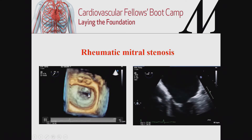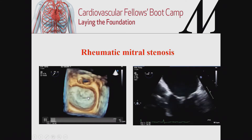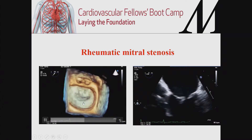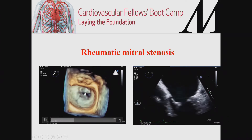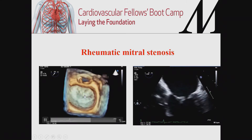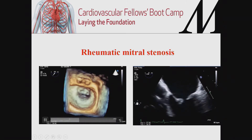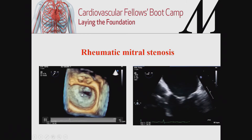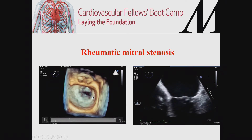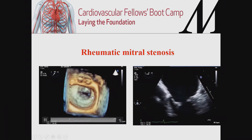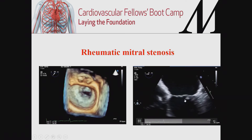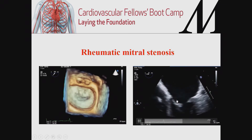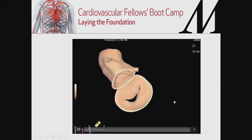This patient on transesophageal echo has the typical fish-mouth appearance of the mitral valve — rheumatic heart disease, not common in the U.S., but seen occasionally in tertiary care centers. There is typical severe restriction of the posterior leaflet with commissural fusion. The anterolateral and posteromedial commissures are significantly fused and thickened, with the typical hockey-stick appearance reflecting restriction of the anterior mitral valve leaflet opening due to commissural fusion.